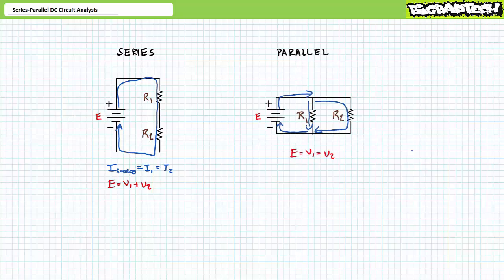Voltage across elements in parallel is the same. Voltage is a two-point measurement. Any and all elements hooked side by side or in parallel with one another to the same two points will experience the same voltage differential. Kirchhoff's current law is an especially useful circuit analysis technique for elements or paths in parallel, which states the sum of currents entering a node will equal the sum of currents leaving a node — or stated more simply, what goes in must come out. Parallel circuit analysis additionally employs a handy shortcut called the current divider rule.